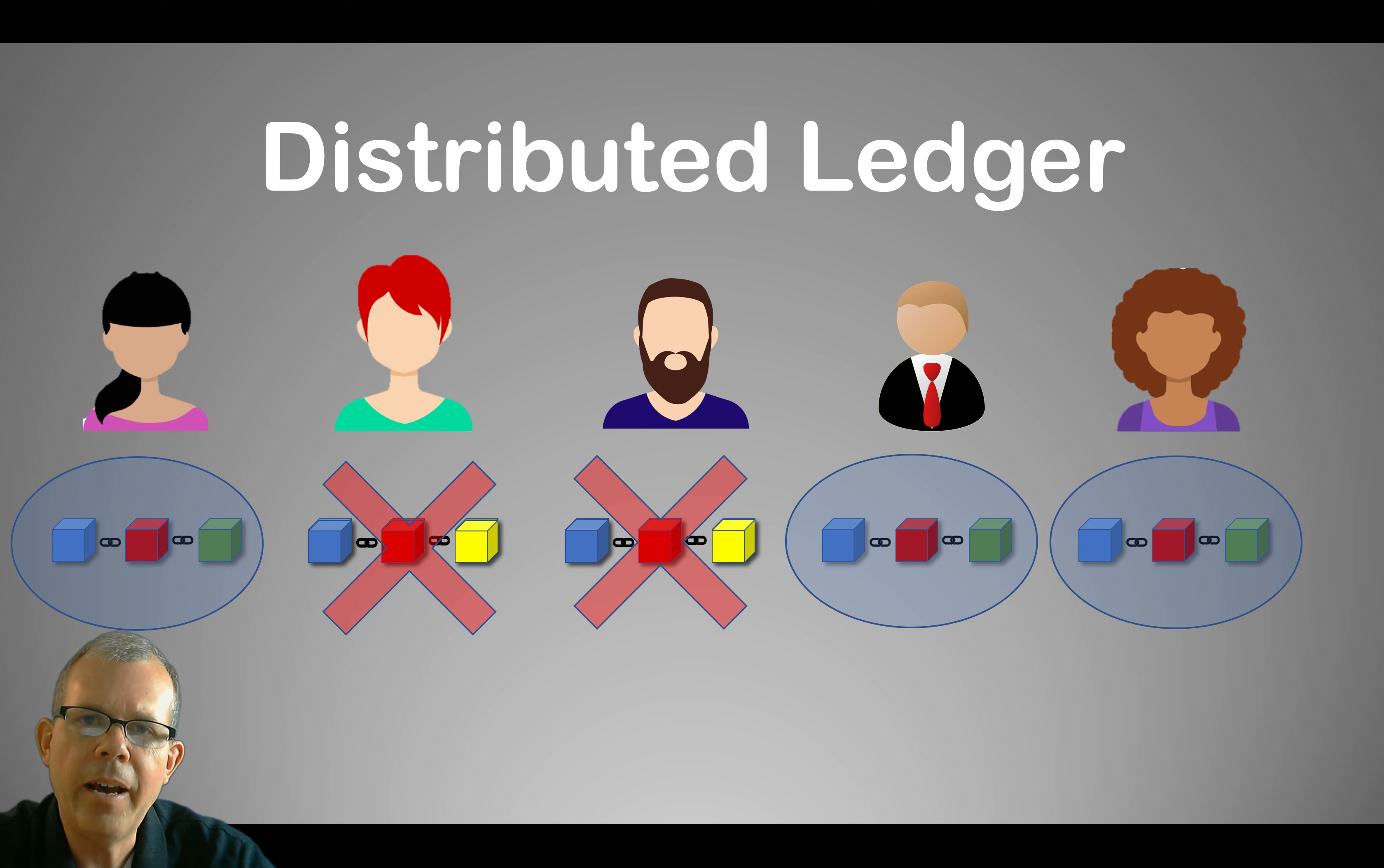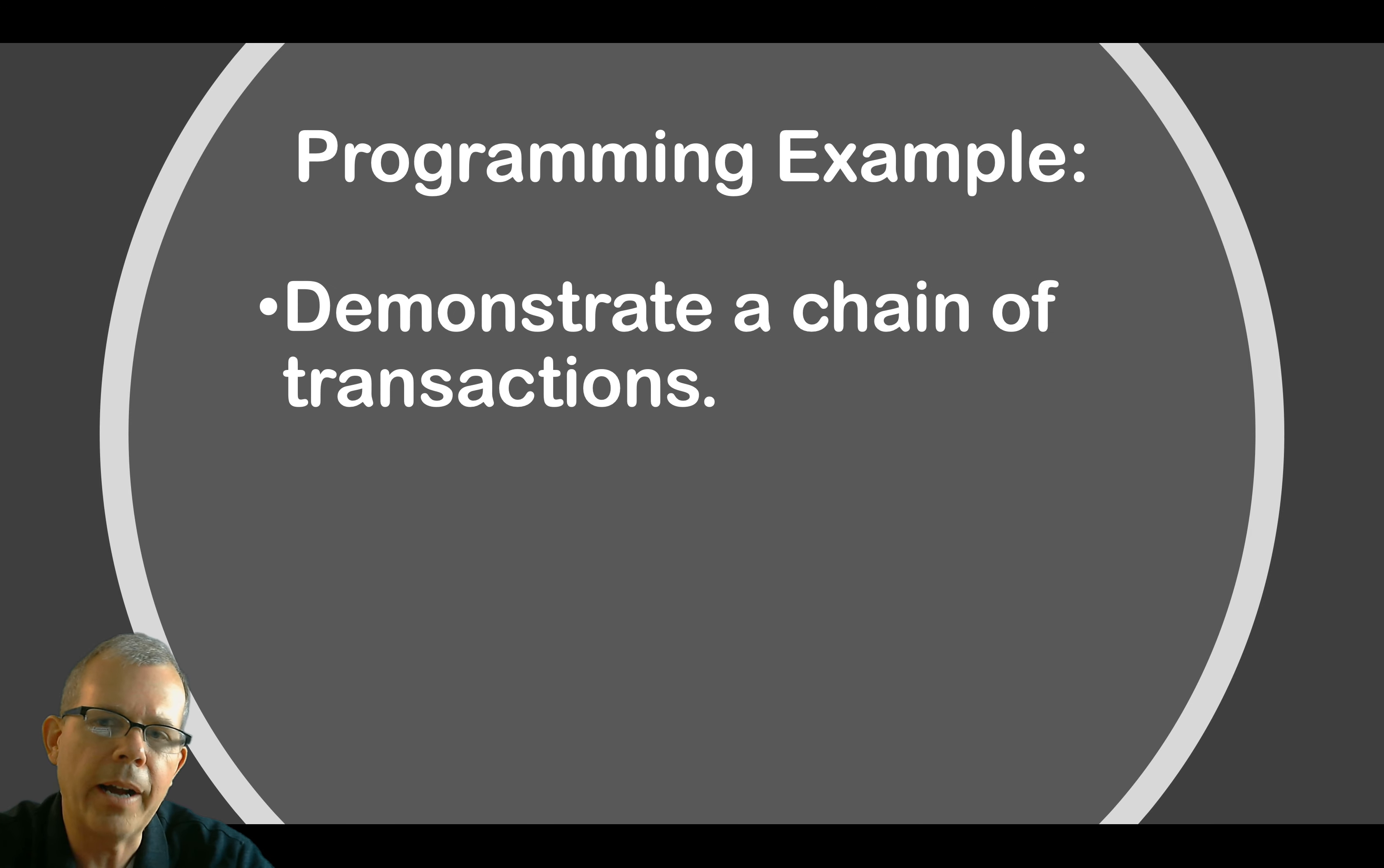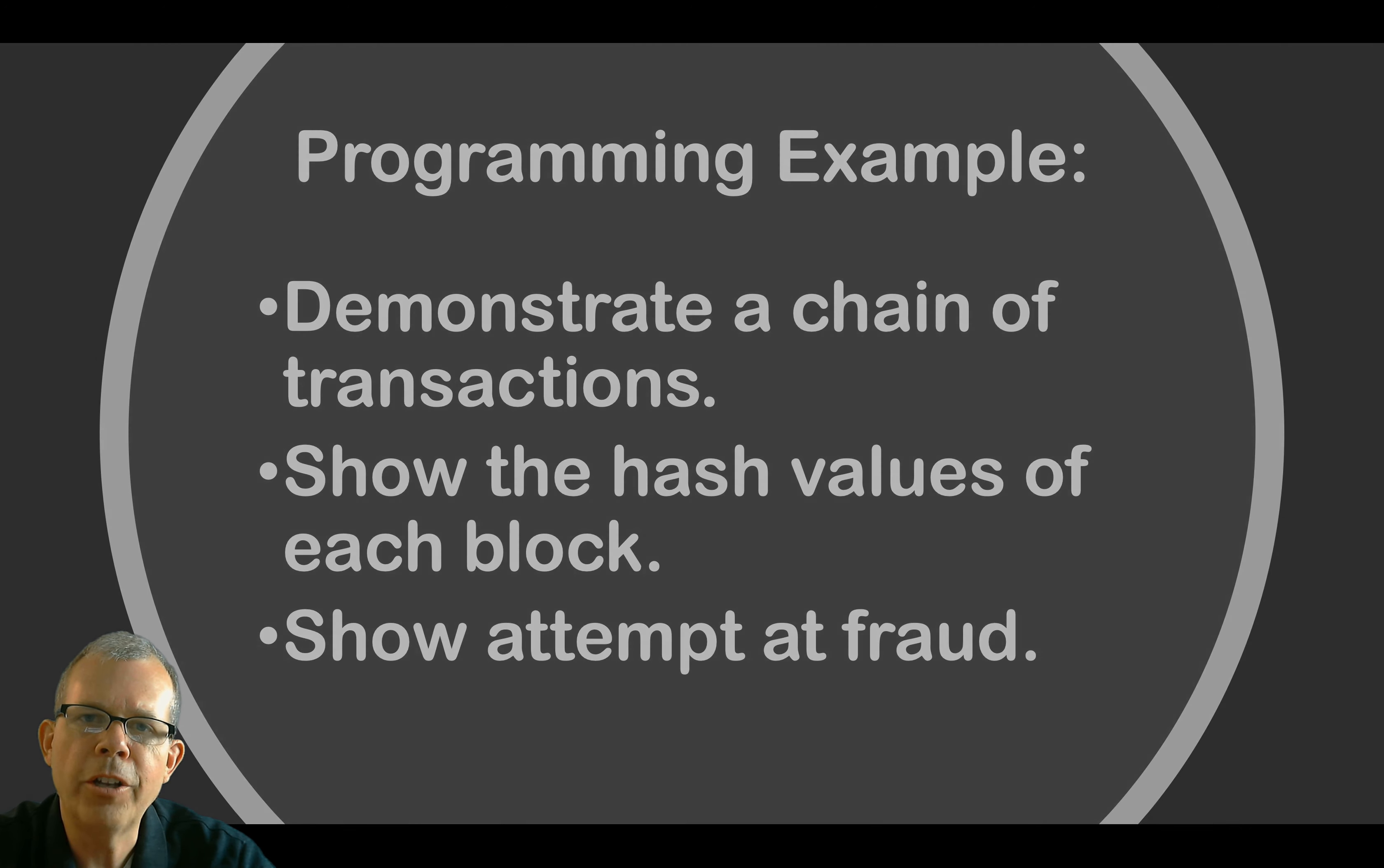So that gives you an idea of the theoretical high-level view of blockchain. Now what we're going to do next is I'm going to show you a programming example so we can actually create a block. In the code, we're going to demonstrate a few blocks in a chain, and then we're going to show the hash values of each block. And then we will show what an attempt at fraud looks like.